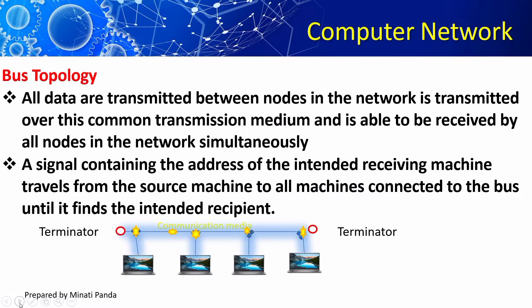In bus topology, the cable is terminated at both ends using terminators. To make bus topology operational, there must not be any open connections, including the ends that attach to the computers. If a computer is removed or if the terminator is removed, it will be an open connection and data could bounce back — this bounce is called signal reflection. If this happens, the data flow could be hampered.